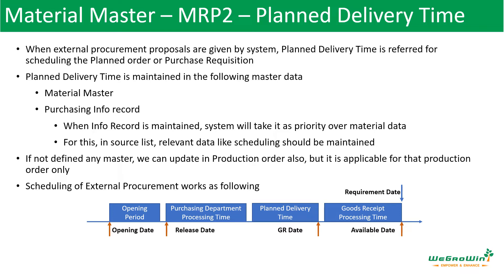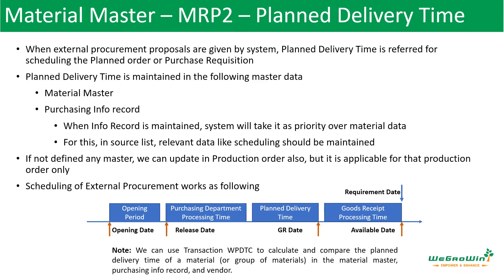The release date will click on the opening date. There is a schedule — over time you have the order release, starting date, you have the date. If you click on the date, you can calculate the system. If we analyze the planned delivery time, we can get the SIP option. This is WPDTC. In the transaction, if you use the material, then the info record, then the actual purchase order base delivery time — this is S4.